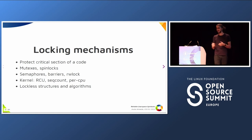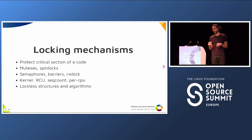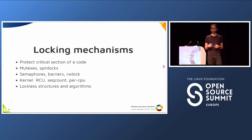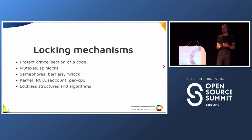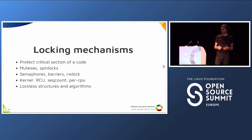The most basic and famous ones are mutexes and spin locks, but we also have semaphores, barriers, and read-write locks. On the kernel side, we have a lot of different things like RCUs and per-CPU operations. Writing locks is so hard that some people really try to avoid dealing with locks and create lock-less structures and algorithms.